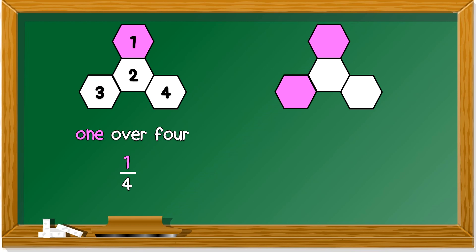Next example, how many parts? One, two, three, four. How many is purple? One. So, you write one over four. Next. How many parts? One, two, three, four. How many with color? The color purple. Two, right? So, you write two over four.